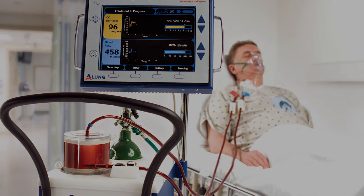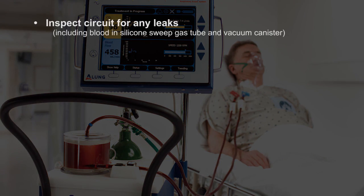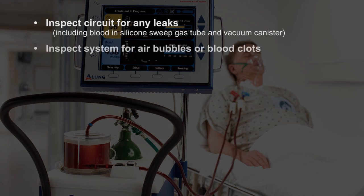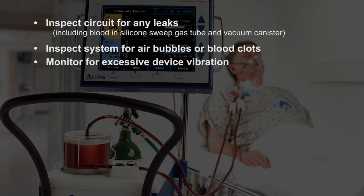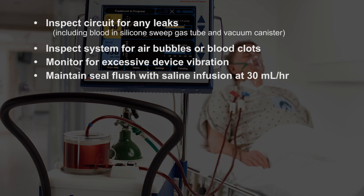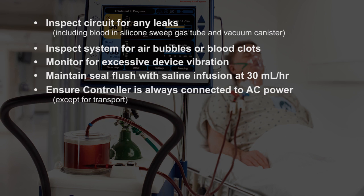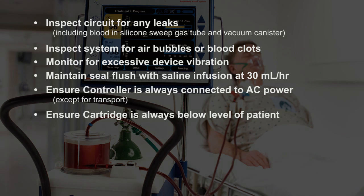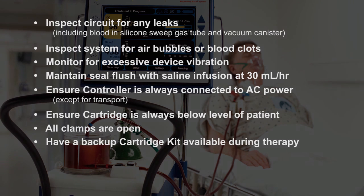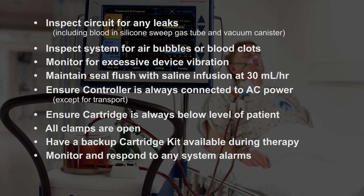Routinely inspect the system during therapy. Inspect the circuit for any leaks, including blood, silicone sweep gas tube, and vacuum canister. Inspect the system for air bubbles or blood clots. Monitor for excessive device vibration. Maintain seal flush with saline infusion at 30 milliliters per hour. Ensure the controller is always connected to AC power except for transport. Ensure the cartridge is always below the level of the patient. Ensure all clamps are open. Have a backup cartridge kit available during therapy. Monitor and respond to any system alarms. Ensure correct sweep gas is used.